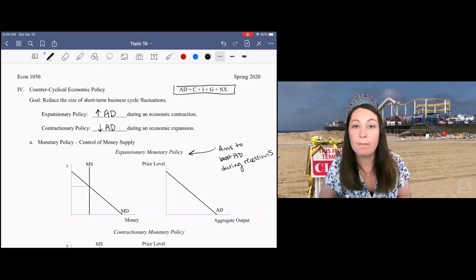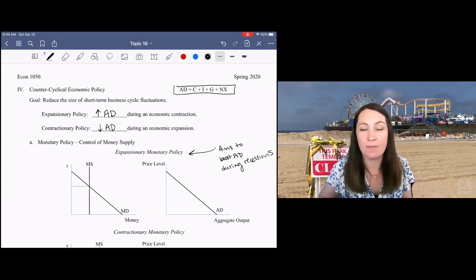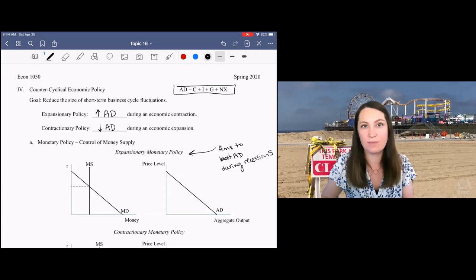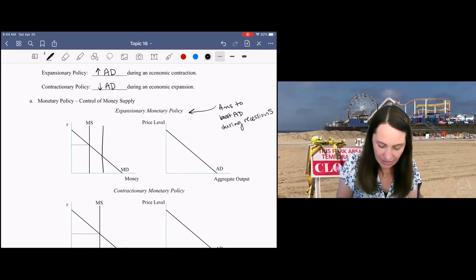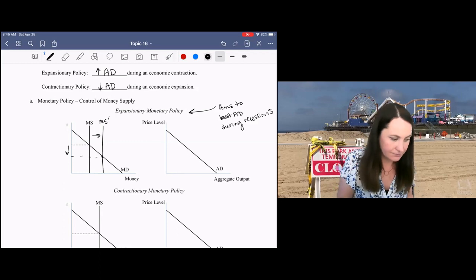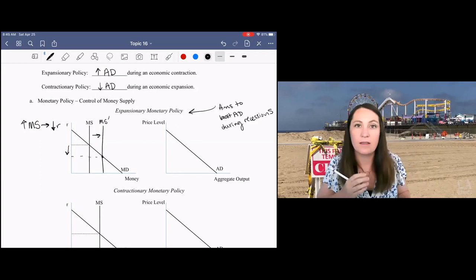How can we do that? Well, remember, aggregate demand is made up of spending - spending by consumers, businesses, the government, and people in other countries. So in order to boost aggregate demand, we want to encourage more spending. To do that, the Fed is going to increase money supply in order to decrease the interest rate.